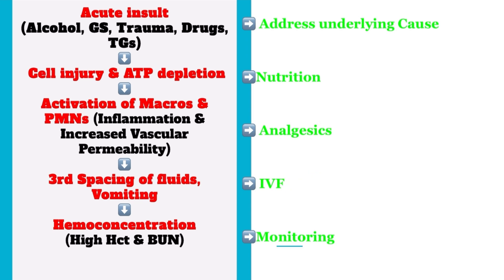After the loss of fluids, the patient develops hemoconcentration — high hematocrit and BUN levels. So we need to monitor hematocrit and BUN levels, along with clinical monitoring.